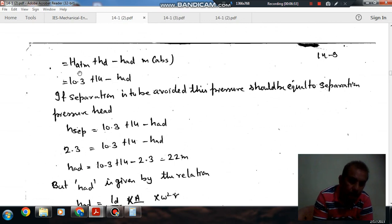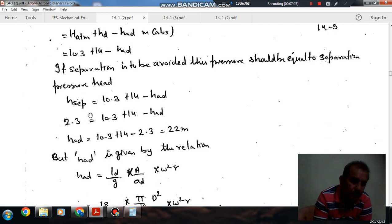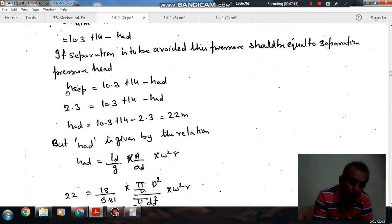This is absolute pressure. HD is given as 14. Now acceleration head in the delivery pipe should be equal to separation head or should be more than separation to avoid separation.